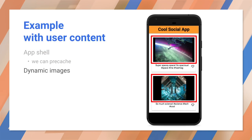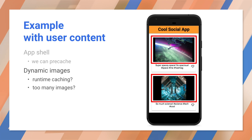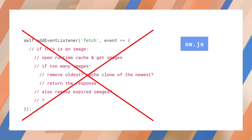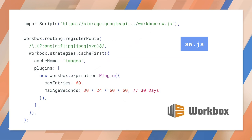For dynamic resources like images, we could consider runtime caching. But for a social media app, there are going to be way too many resources, and the amount of files we'd have to cache will grow out of control. We could try to implement a caching strategy that limits the number of files, removing old or outdated ones, but that's quickly going to get complex and error-prone. Instead, we can use Workbox, which we should probably be using for all of our service worker code anyway. Workbox is a fantastic library that abstracts common service worker use cases and covers edge cases that we might otherwise miss.